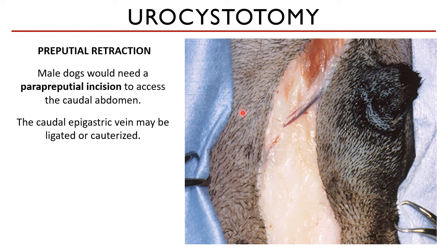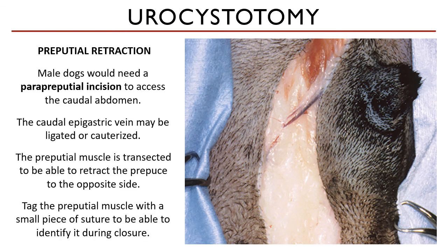Transecting the middle of the muscle belly allows you to fully retract the prepuce to the opposite side. You should tag this muscle with a small piece of suture so that once you are closing the wound, you will be able to identify it and close it as well.